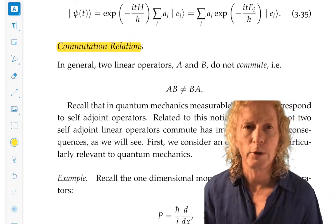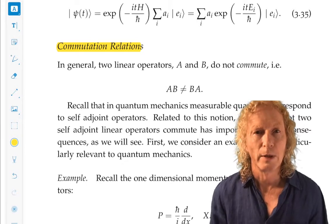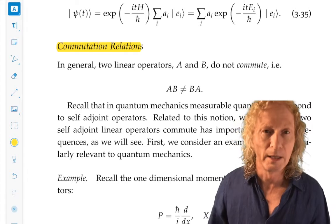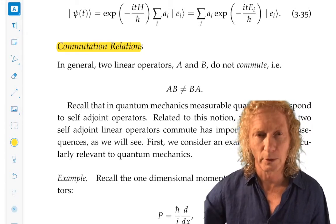You're probably familiar that if you have two matrices, A and B, that AB does not equal BA in general. And the same is true for linear operators for which matrices are special examples.